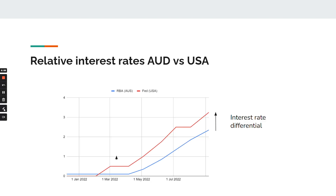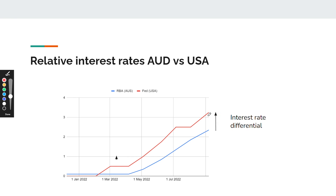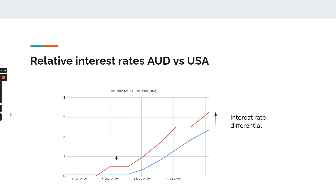There's an example of relative interest rates between the USA and Australia. You can see that the interest rate differential — the difference between the two — is getting larger, and this has changed even more since 2022. What that means is there's less demand for Australian dollars, which will depreciate the AUD, which is exactly what's happening right now.